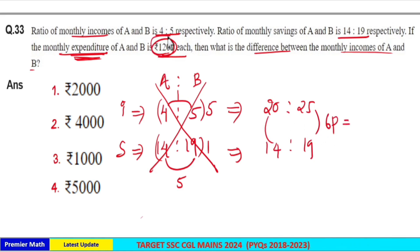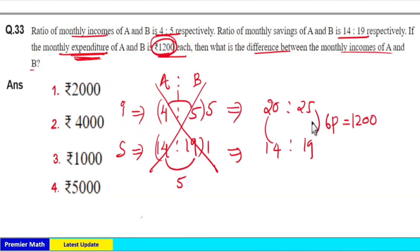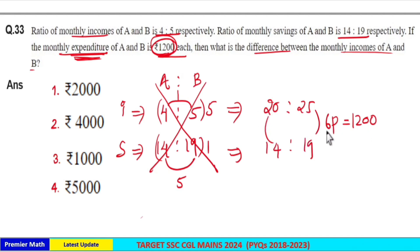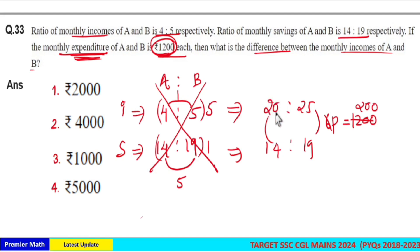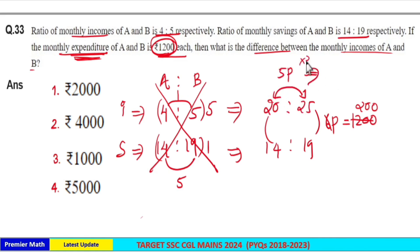So 6 parts is given as 1200, because the expenditure for each of them is 1200 — in both cases the expenditure is 6 parts, which equals 1200. Therefore 1 part is equal to 200. The difference in income of A and B is 25 minus 20, which is 5 parts. So 5 parts equals 5 × 200 = 1000.